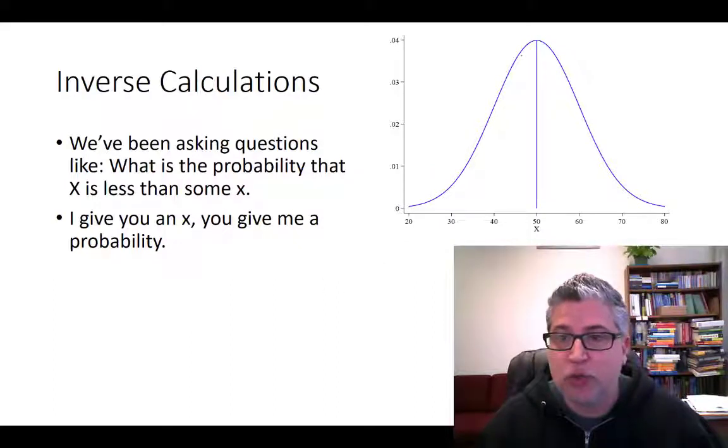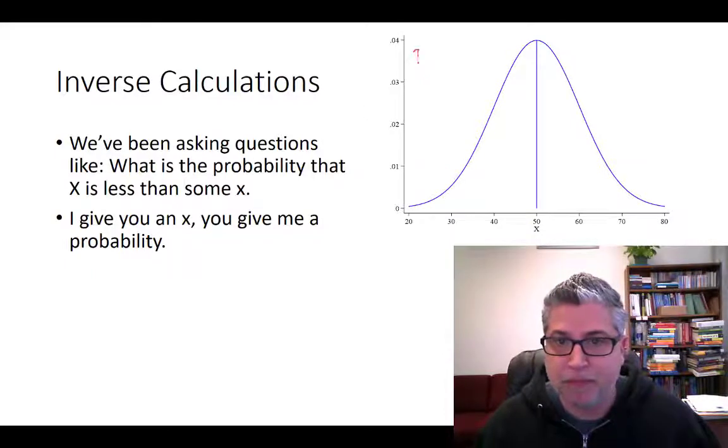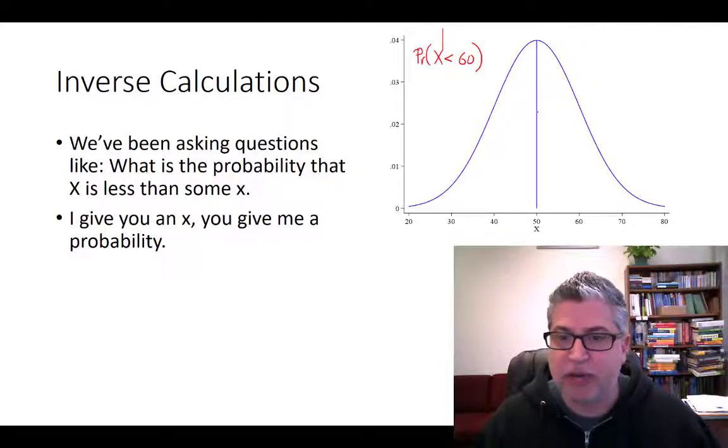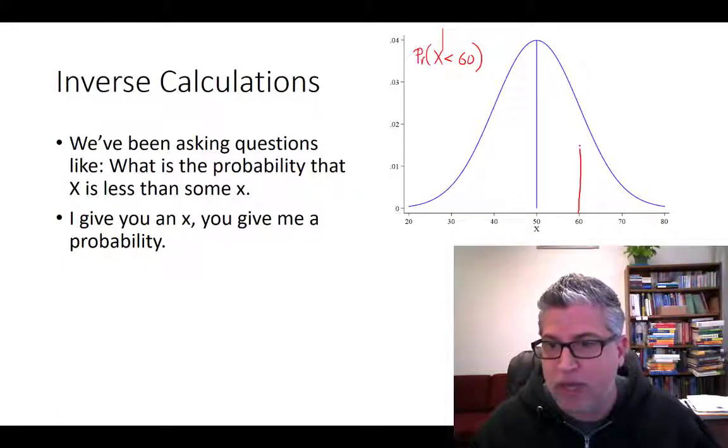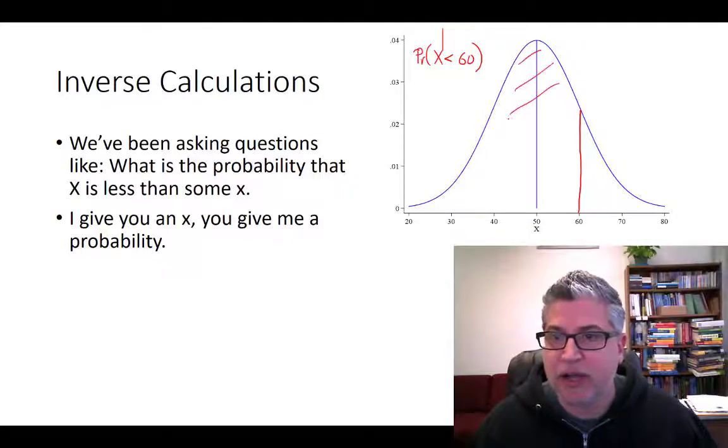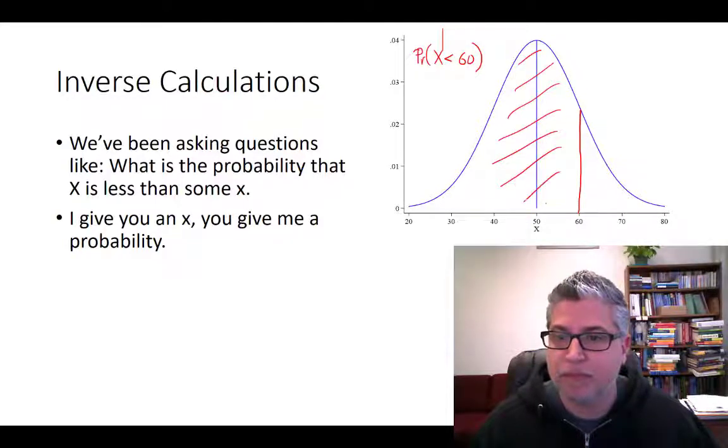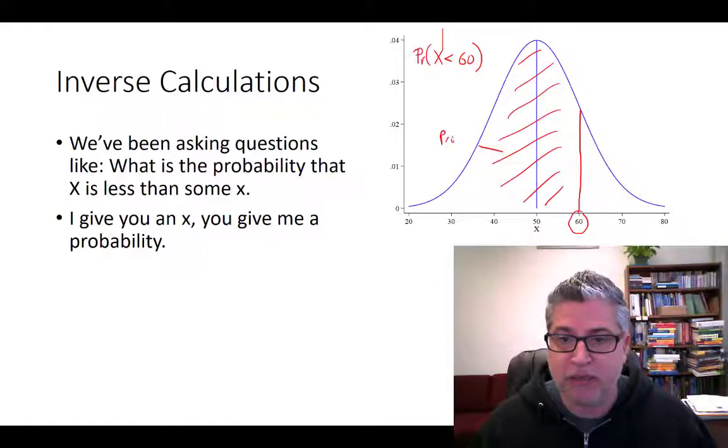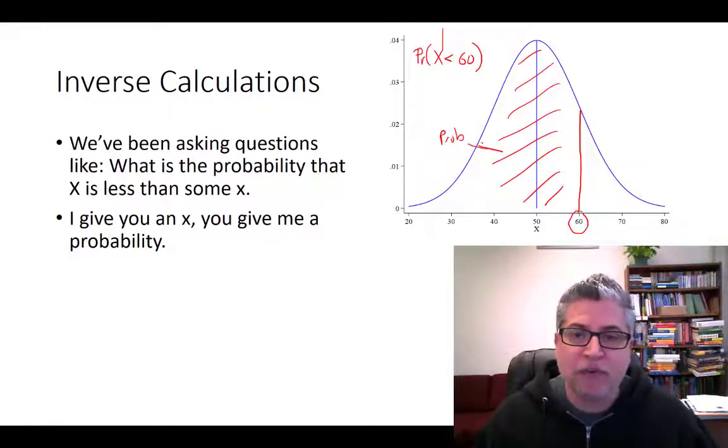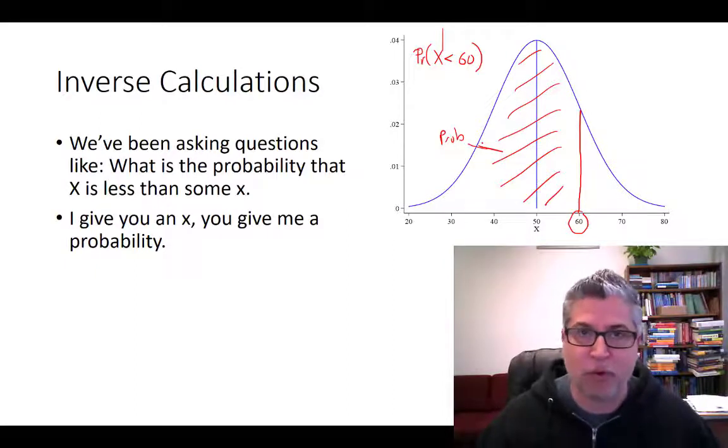So on this normal distribution, I might ask, what's the probability that our random variable is less than 60? Here we can see that we've got a normally distributed variable with a mean of 50, so what is this entire area here? Your professor or teacher gives you this, and you need to provide the probability.